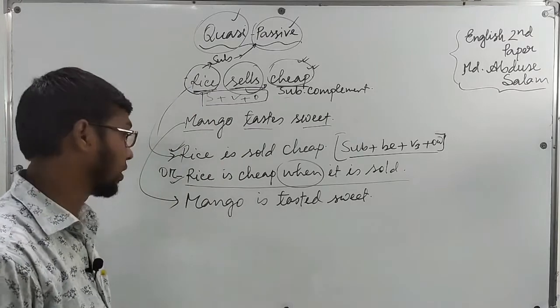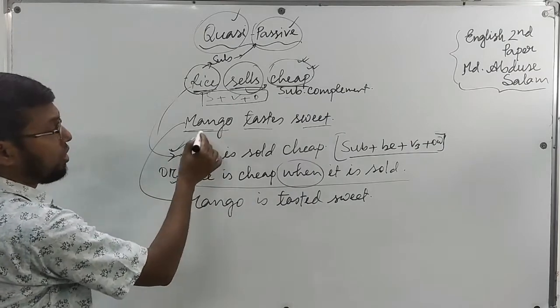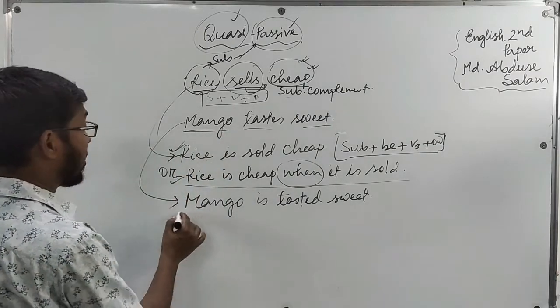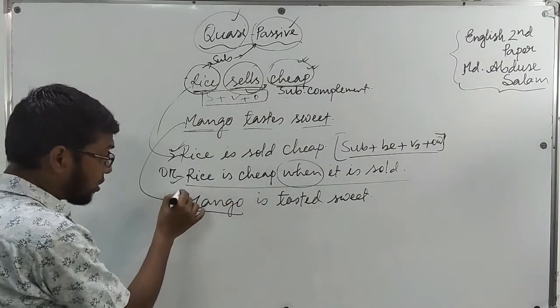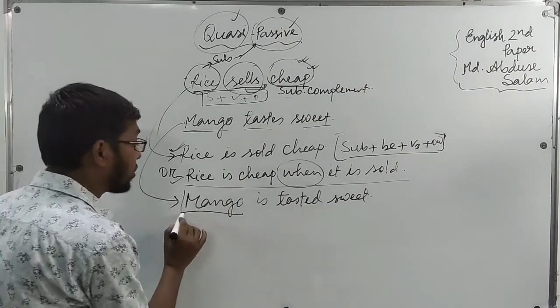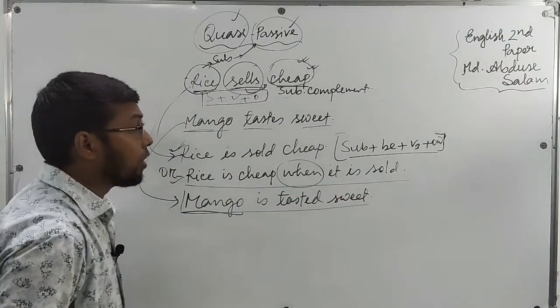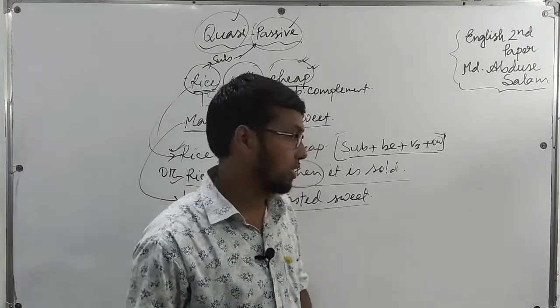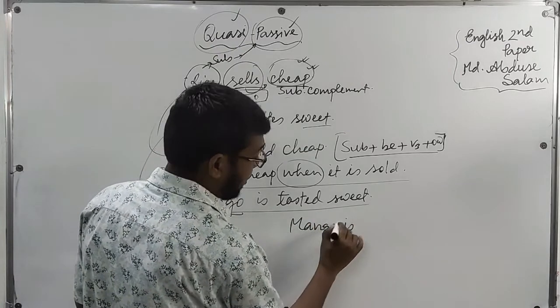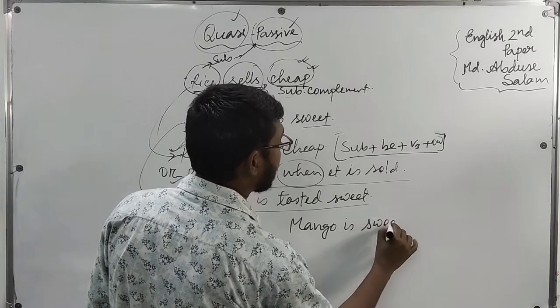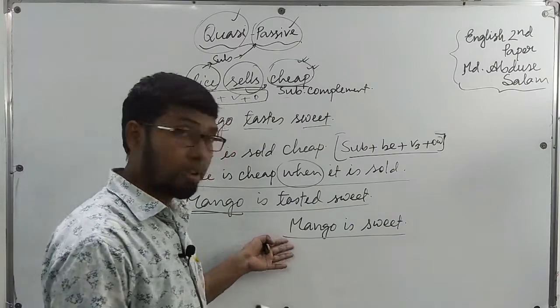Mango is sweet when it is tested. The mango is tested sweet. The iterator was on: Mango is sweet when it is tested. Can't make an issue of a process, a progress job or a boy.